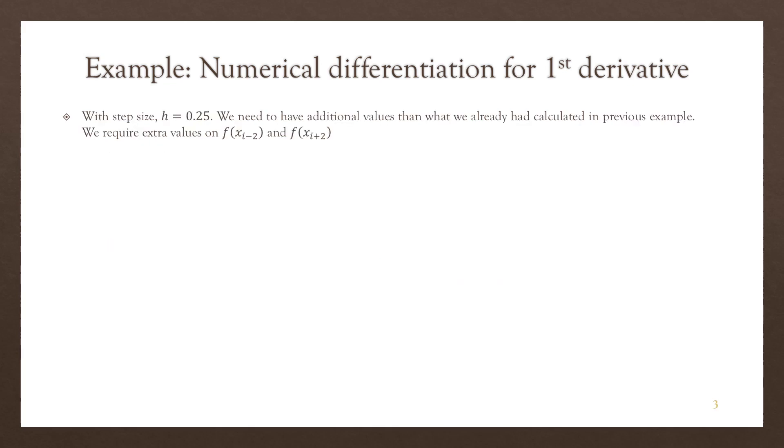We can calculate now the value of the function at x_i minus 2 and the value of the function at x_i plus 2. x_i minus 2 is actually 0.5 minus 2h, which is equal to 0. So the value of the function at 0 is minus 0.7. Meanwhile, x_i plus 2 is actually 1, so the value of the function at 1 is equal to 0.5.